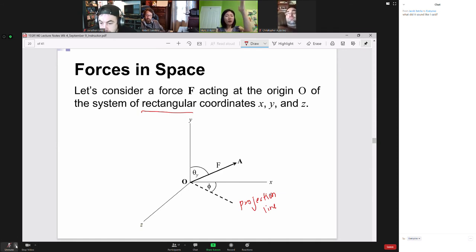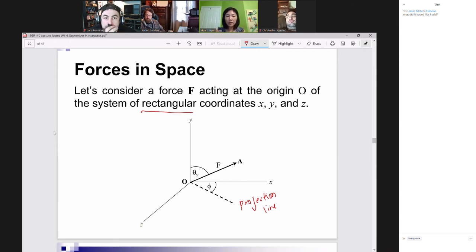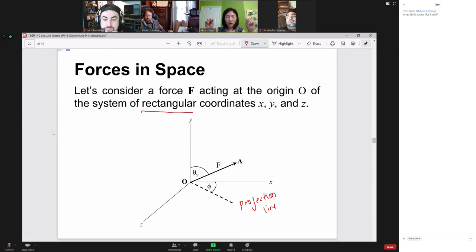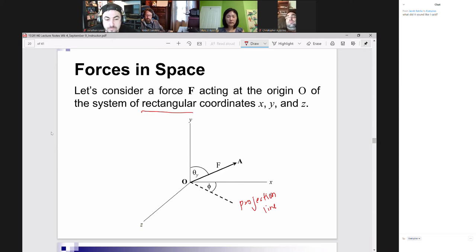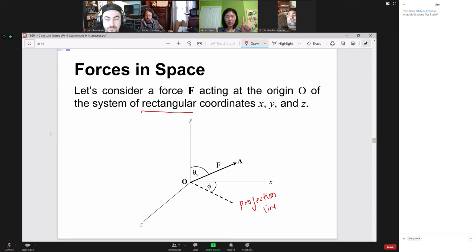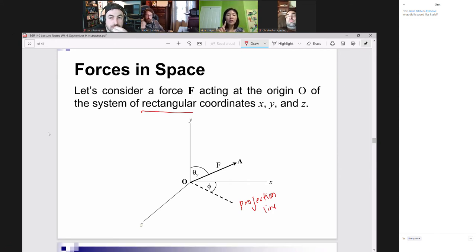Then if I bring my force acting in space down onto the floor as its image on the projection line, what would constitute your horizontal plane? What would constitute as your floor? Louis? X-axis. X and what else is in the horizontal plane? You need two. Z. Very good. So your horizontal plane is the x-z plane.